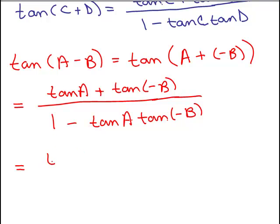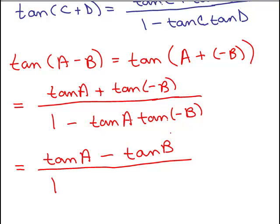So this becomes tangent of A minus the tangent of B over 1. All right. Now, this minus sign here, okay, I'm going to pull it out. So it's going to be 1 minus, it's a little confusing, times the negative tangent of B.